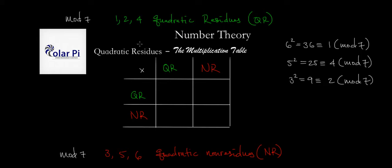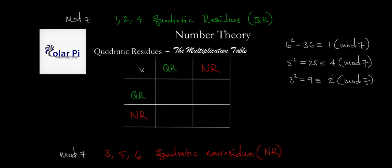Hey guys, welcome. So in my introduction to quadratic residues, where we asked the question what are quadratic residues, we looked at an example of the quadratic residues mod 7, and we said that 1, 2, and 4 are quadratic residues mod 7. That was because 6 squared, which is 36, is equal to 1 mod 7, and 5 squared is congruent to 4 mod 7, and 3 squared, which is 9, is congruent to 2 mod 7.